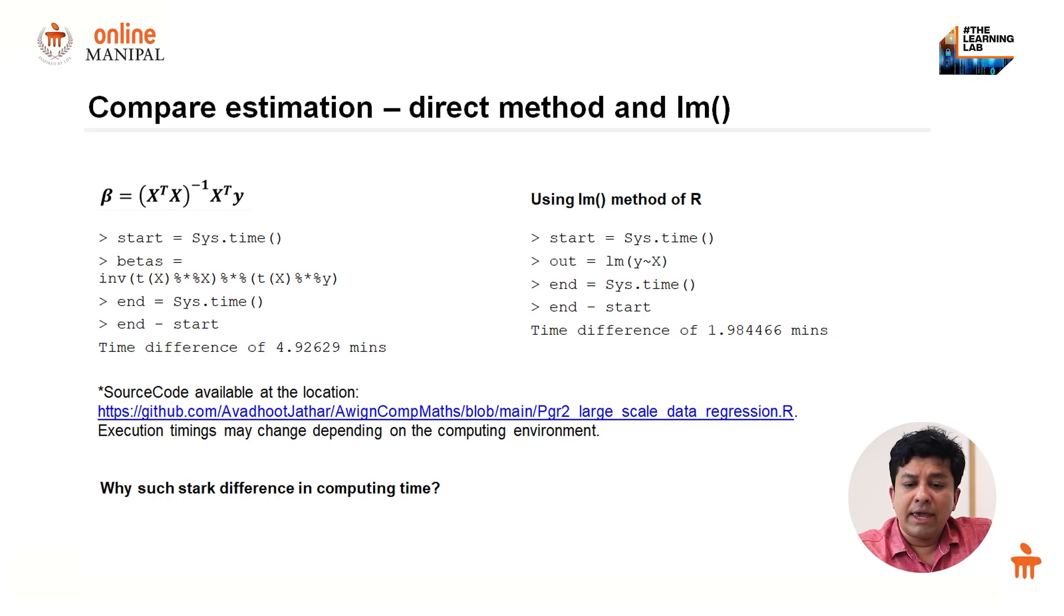I'm going to give you a comparison of direct method and the lm package in R. Direct method is where I compute the model coefficients using x prime x inverse x prime y. For a 200 variable problem with 1 million observations, it took close to 5 minutes to estimate my betas, whereas using the same lm method in R, the same problem has been done in less than 2 minutes. Why is there such a stark difference in computing time?